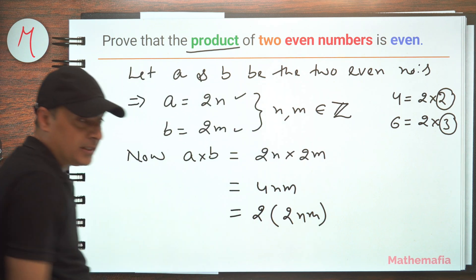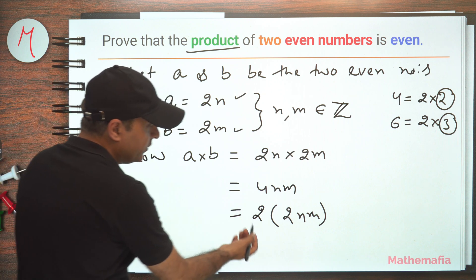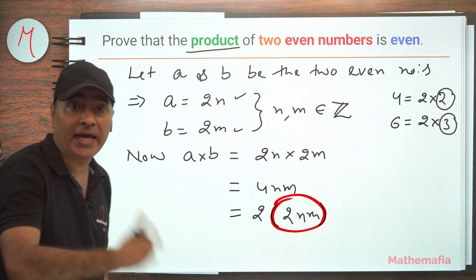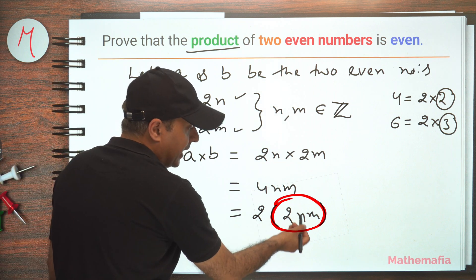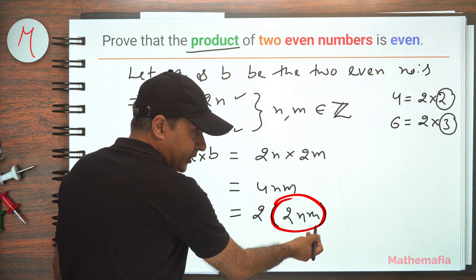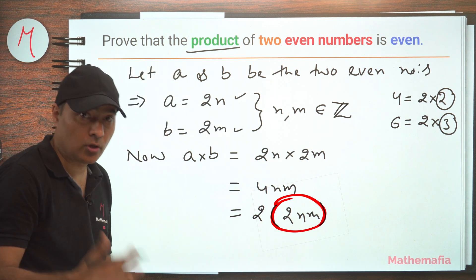Why do I want to write it like this? Because I have to prove that it is of the form 2 times an integer. Now this is an integer because 2 is an integer, n is an integer, m is an integer. So if I multiply integers, then the output is also an integer.